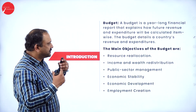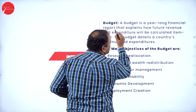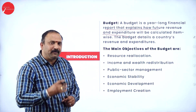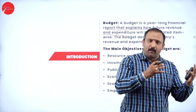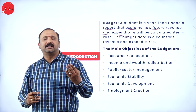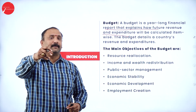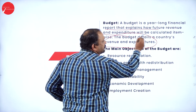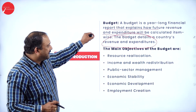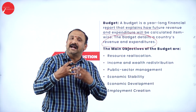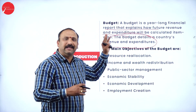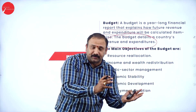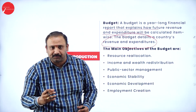Now let's go into the chapter and try to understand what a budget is all about. A budget is a year-long financial report that explains how future revenue and expenditure would be calculated for a given set of items. Now we all know that we have been doing budgeting as a part of exercise, both at the home front and also at the professional front. When we talk about budget in economics, we are talking about a budget that the nation would be doing. So a budget details a country's revenue and expenditure, which is very, very important.